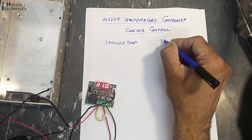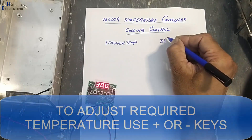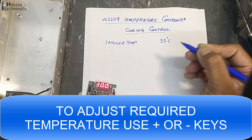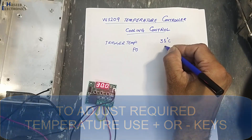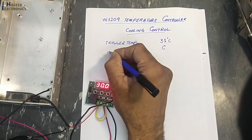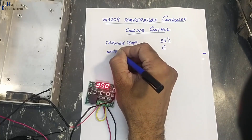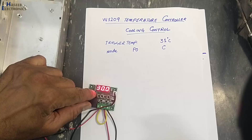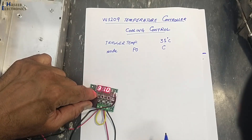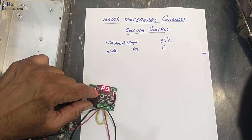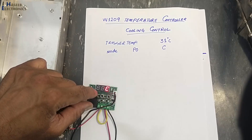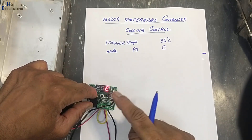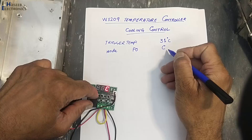Press the Set button — it is flashing at 31°C. Our trigger temperature is 31°C. In P0 we will set it to cool mode. Press Set again — for cooling mode we will set it to C, so it will now work in cool mode.